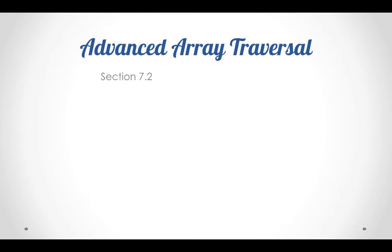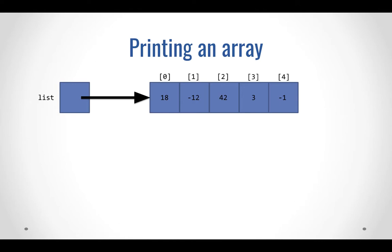This is advanced array traversal — a continuation of section 7.2 from our textbook. Here's a diagram we've shown in previous lectures. When we talk about an array, the way your computer views it is it reserves one location in memory — that's what this box on the left represents — and it gives that location a name. That identifier helps find this box, which is connected to another string of boxes where we store the values of the array. When you ask for list, it points to the other locations where we keep the values.